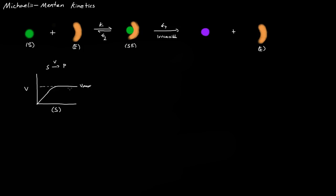The reason Vmax exists is because there's a limited number of enzymes. Say we have 50 enzymes — E₀ = 50. With 10 substrates, they can easily find a free enzyme. With 30, still manageable. But around 50 or 100 substrates, they can't find a free enzyme anymore, so the reaction rate maxes out. That maximum production rate is Vmax, and it changes with the number of enzymes.